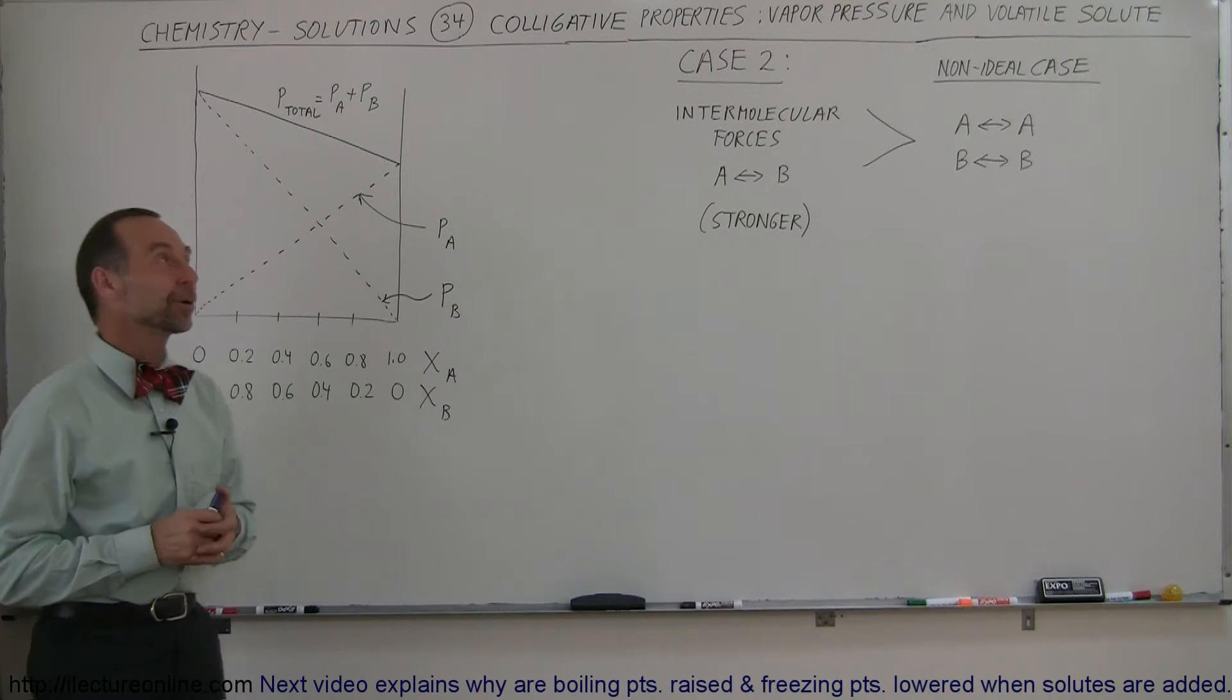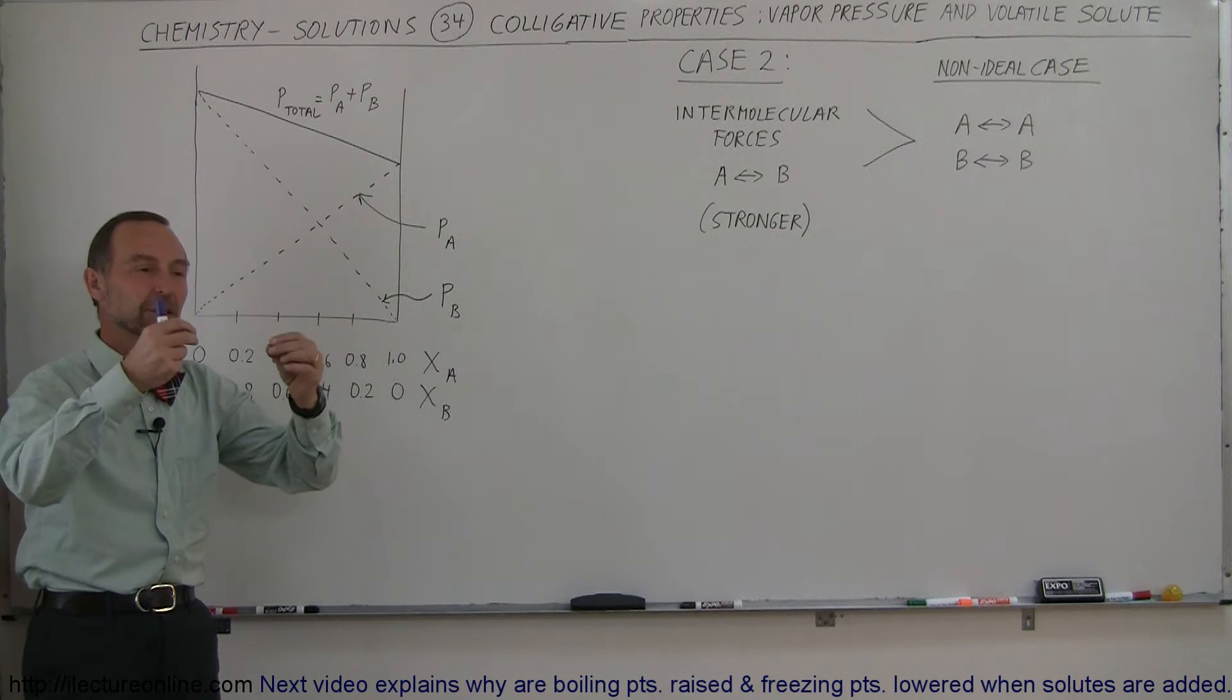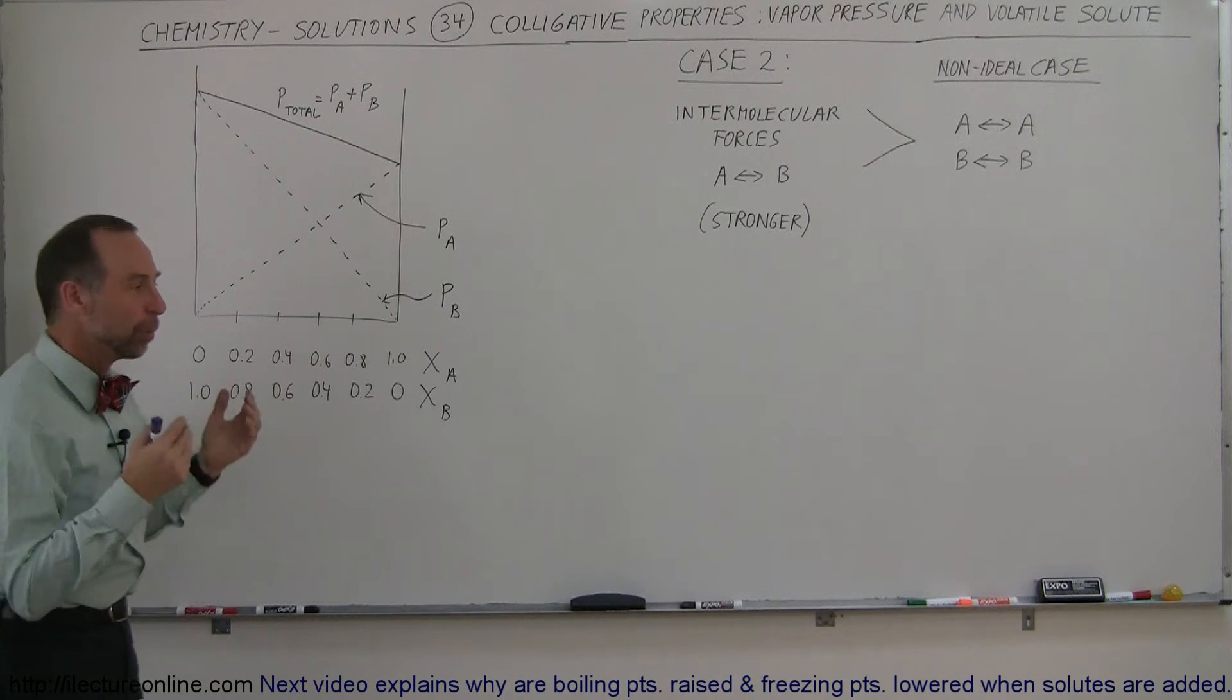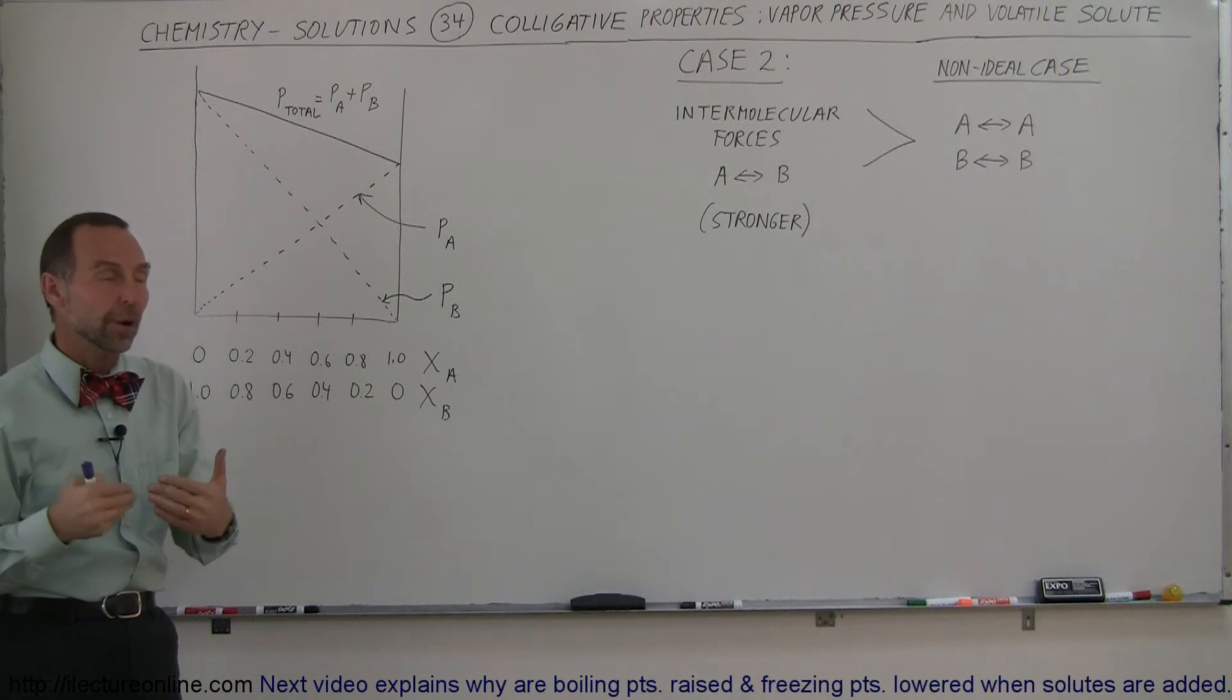Welcome to Electron Line, and now we're going to look at case two where we bring two components together to make a solution and both of the components are volatile, and therefore both components will have a vapor pressure in their own right.